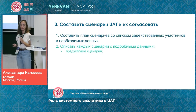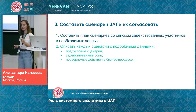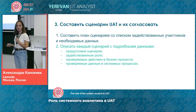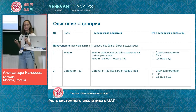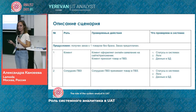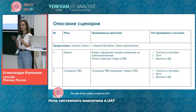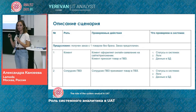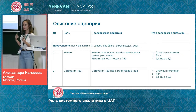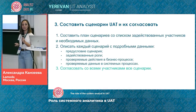Then you describe each scenario with detailed information: the preconditions for the scenario, the roles, the activities under business processes to be checked, and the systemic processes to be checked. This can be represented as a table with item number, role, activities to be checked during each step, and what needs to be checked in the system — status in the system, logs, information in the database, etc. We mention only what is important for our team.